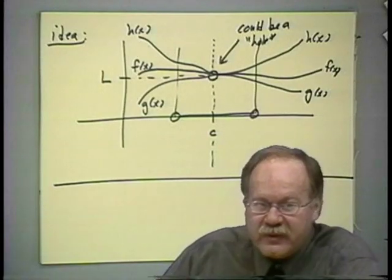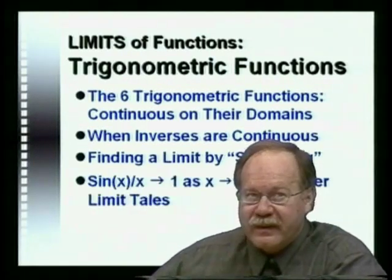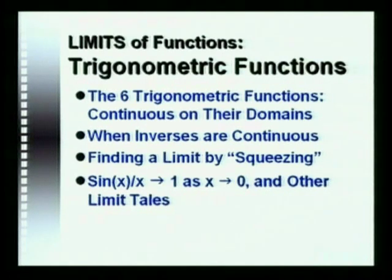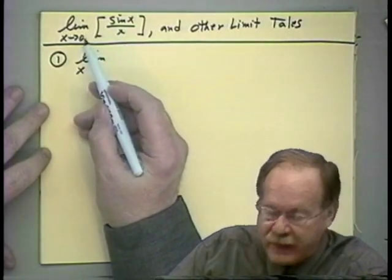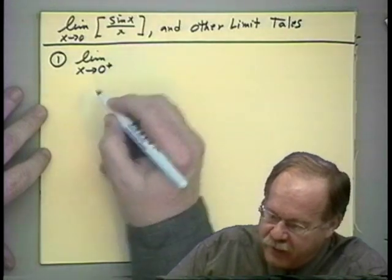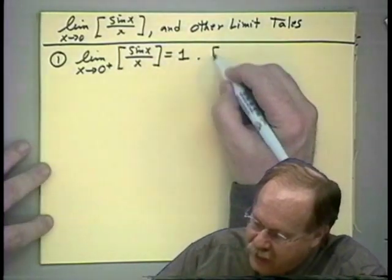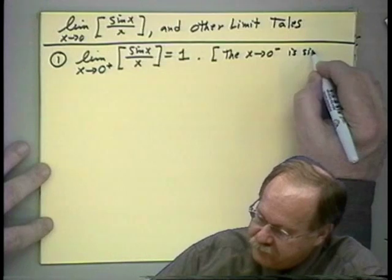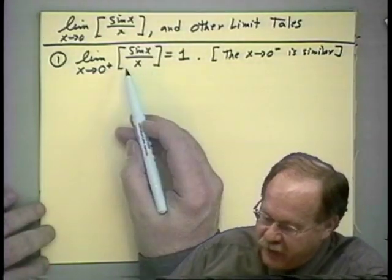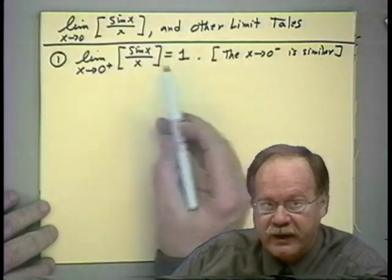We'll use the squeezing theorem to find that the limit of sin(x)/x as x → 0 equals 1. Rather than doing the full two-sided limit, I'll just do one side — as x approaches 0 from above — and show it equals 1. The proof for x approaching 0 from the left is similar. We'll imagine dealing only with positive x's as angles approaching 0 from above.